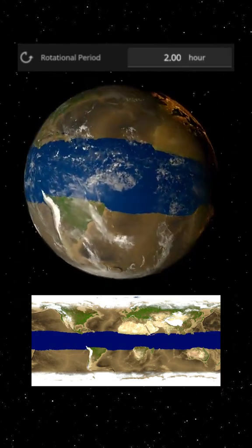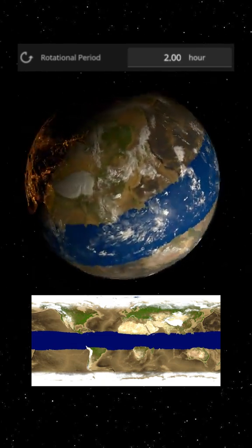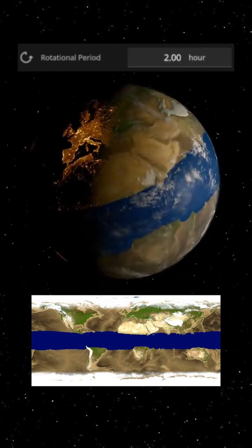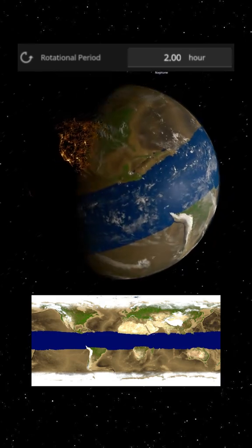causing the equator to bulge outward while flattening the poles. Oceans would be pulled towards the equator, creating a massive water belt around the middle of the planet. This would cause severe flooding in equatorial regions and potentially leave higher latitudes dry.